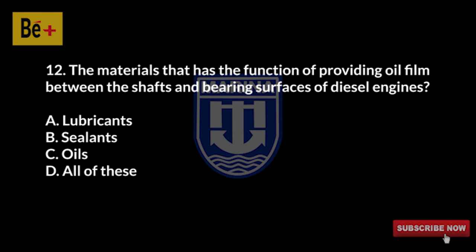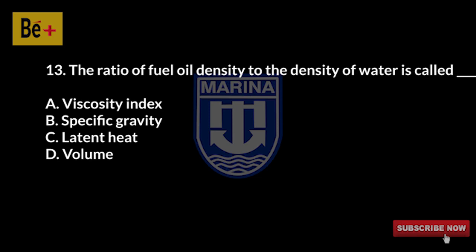The materials that have the function of providing an oil film between the shafts and bearing surfaces of diesel engines are: A) lubricants, B) sealants, C) oils, D) all of these. The answer is A, lubricants.